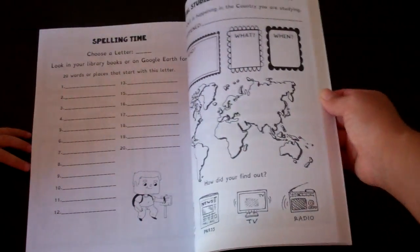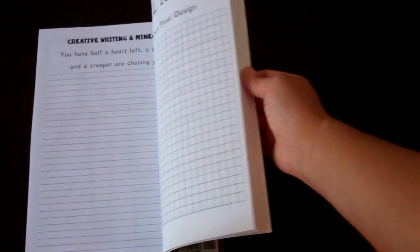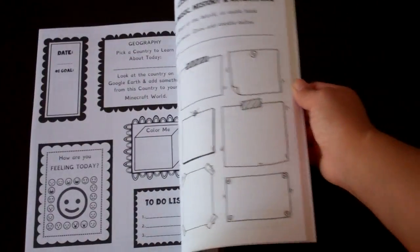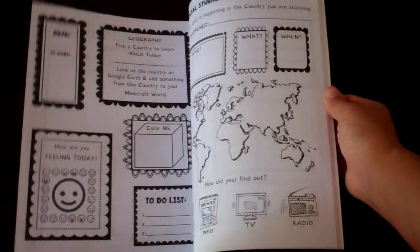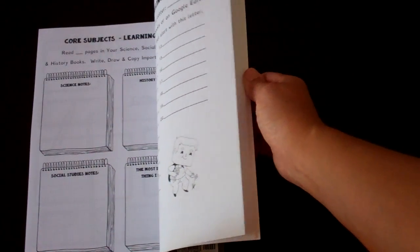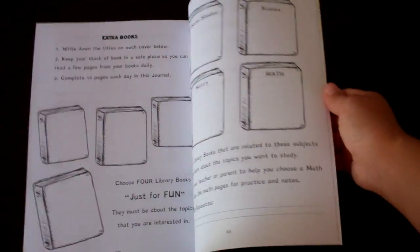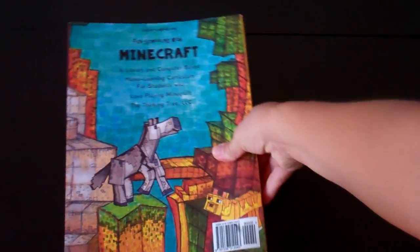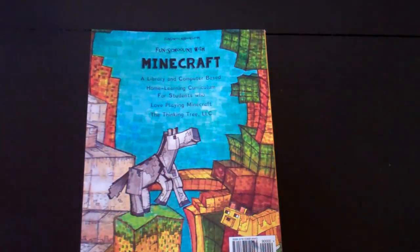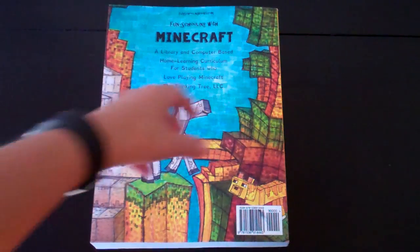I didn't show you every page for time's sake. It's already six minutes 35 seconds into this. But hopefully you get a good idea about it. If you have any questions, feel free to comment on the video or ask. There's a Facebook page for Fun Schoolers and you can go to Dyslexia Games. So there you have it, this is the Minecraft journal.